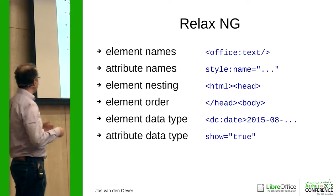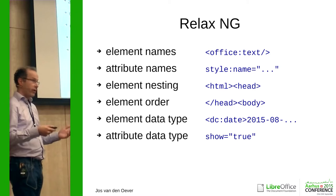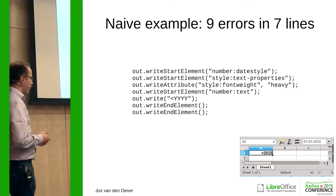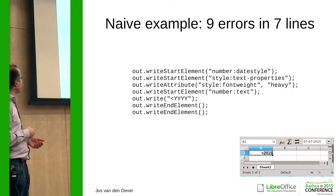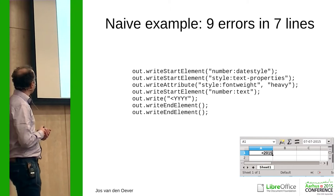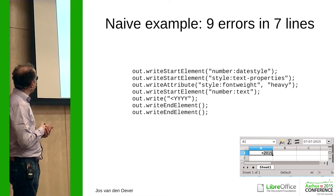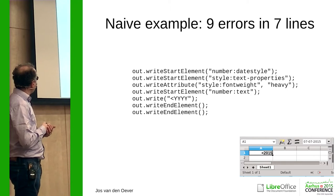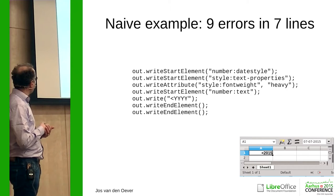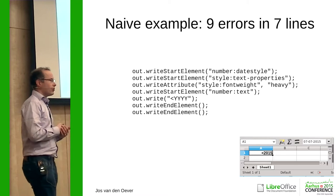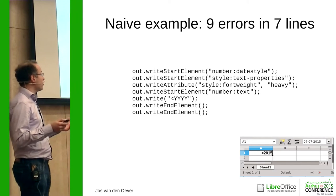We have ODF validators. They use RelaxNG and they check if everything is okay. Let's try to write out this example. Here is a very simple API for writing XML. We call write start element with a string for the tag, then another element, write the attribute, write the start element, then write out this form, and then close the elements. I wrote here nine errors.